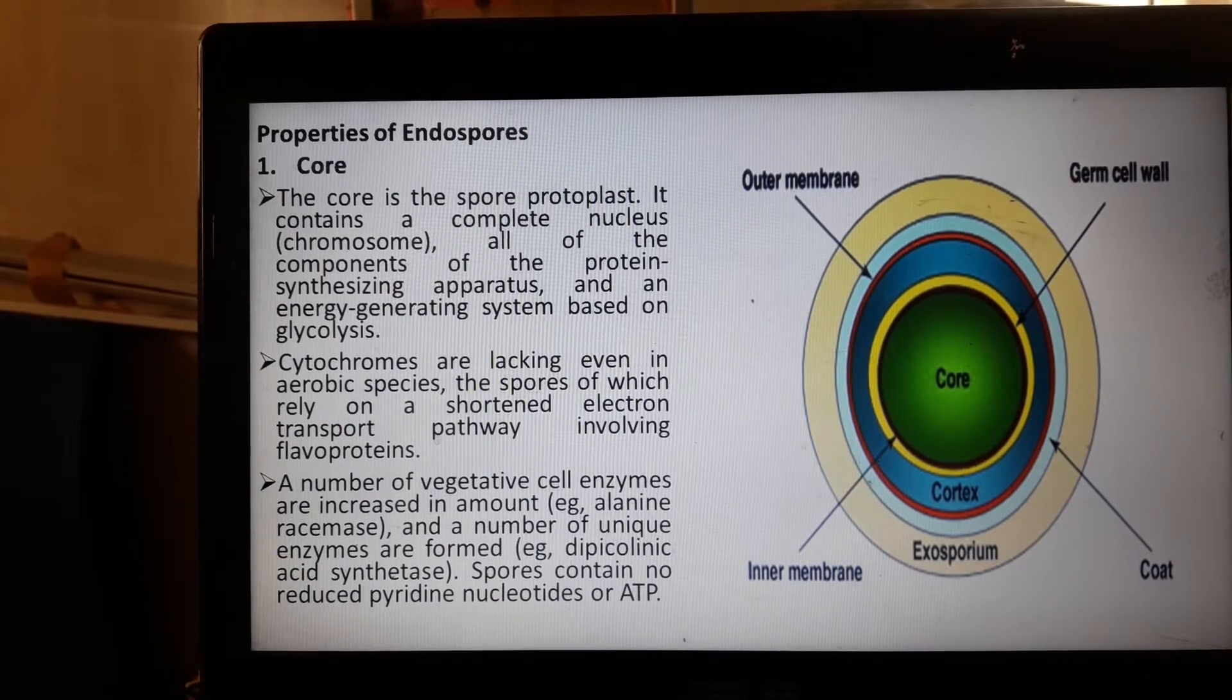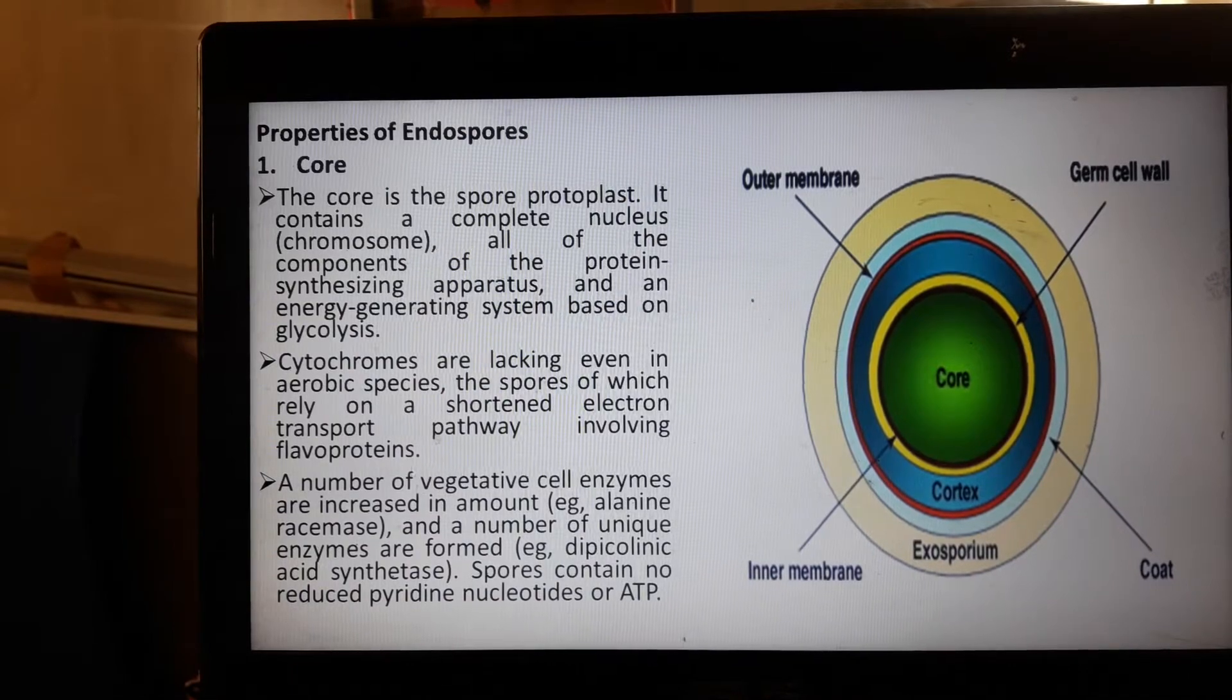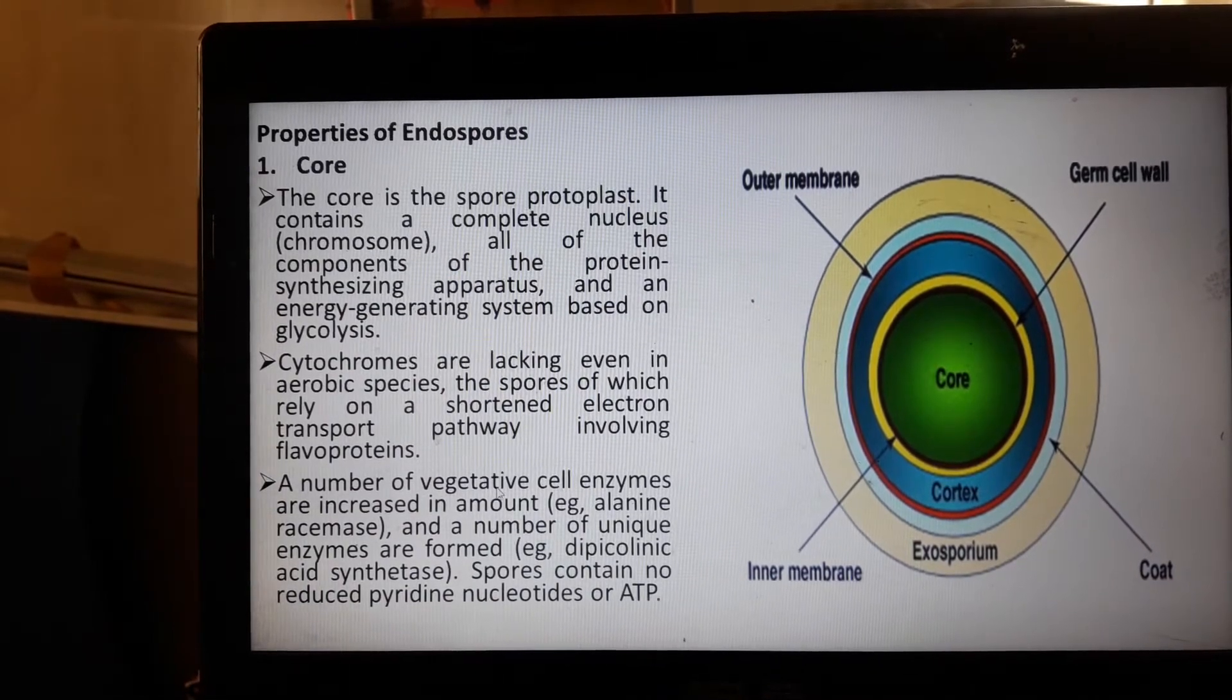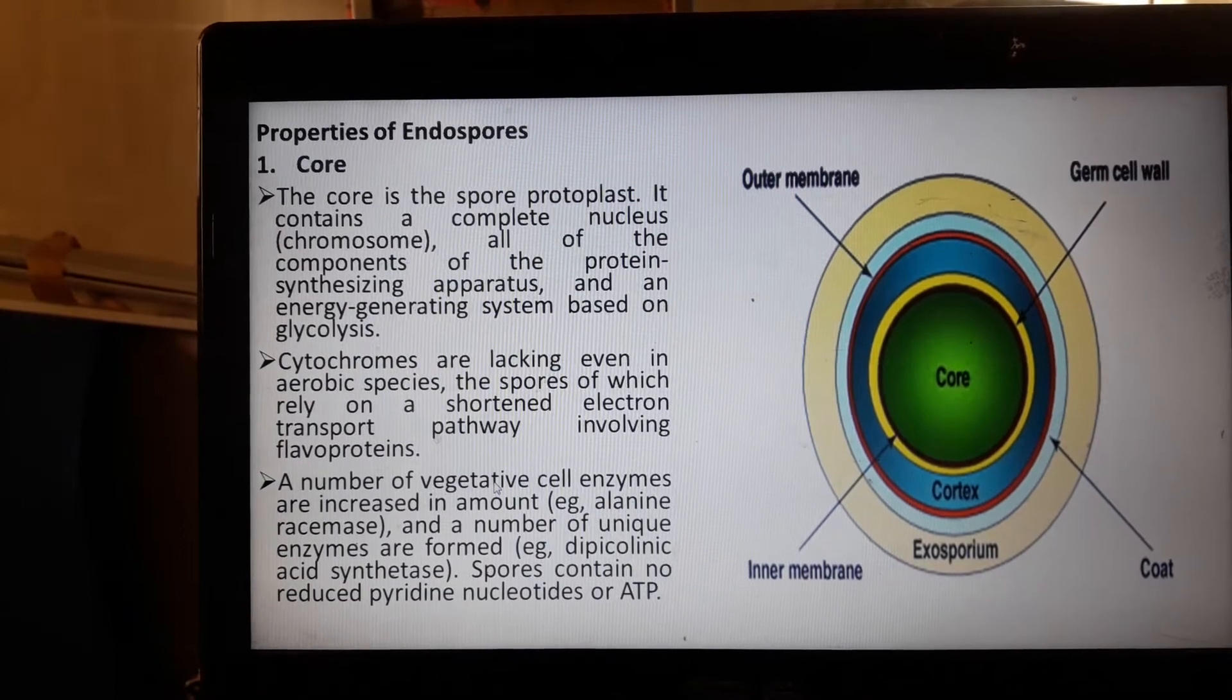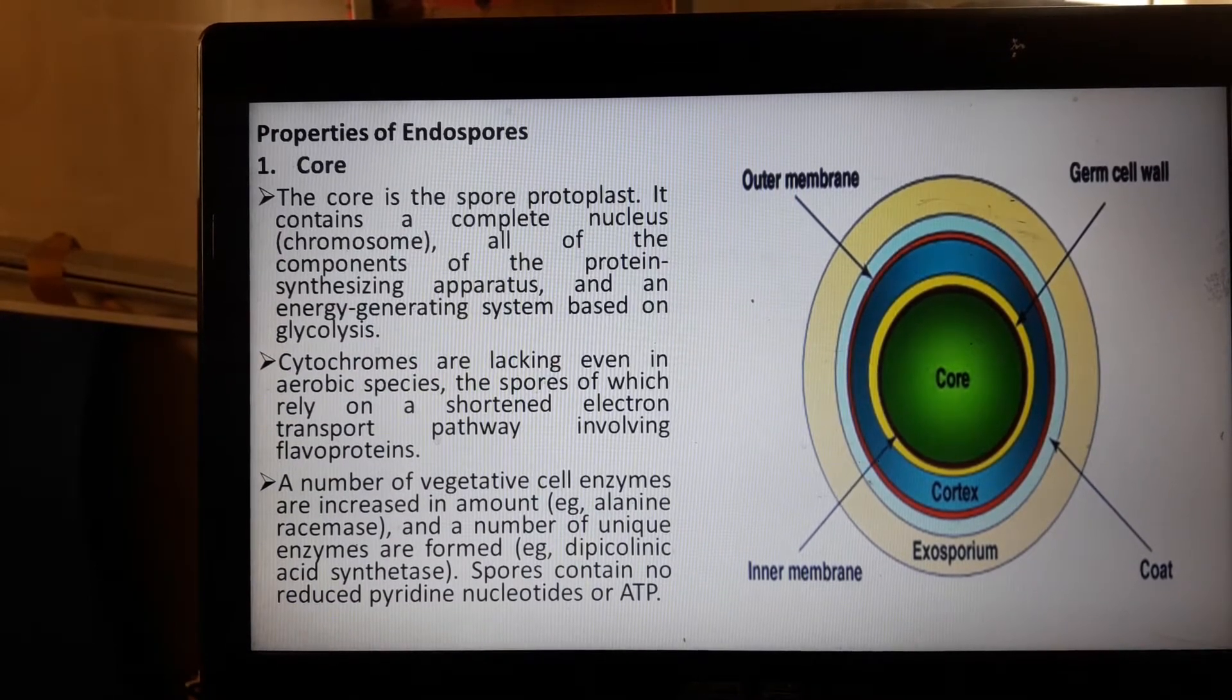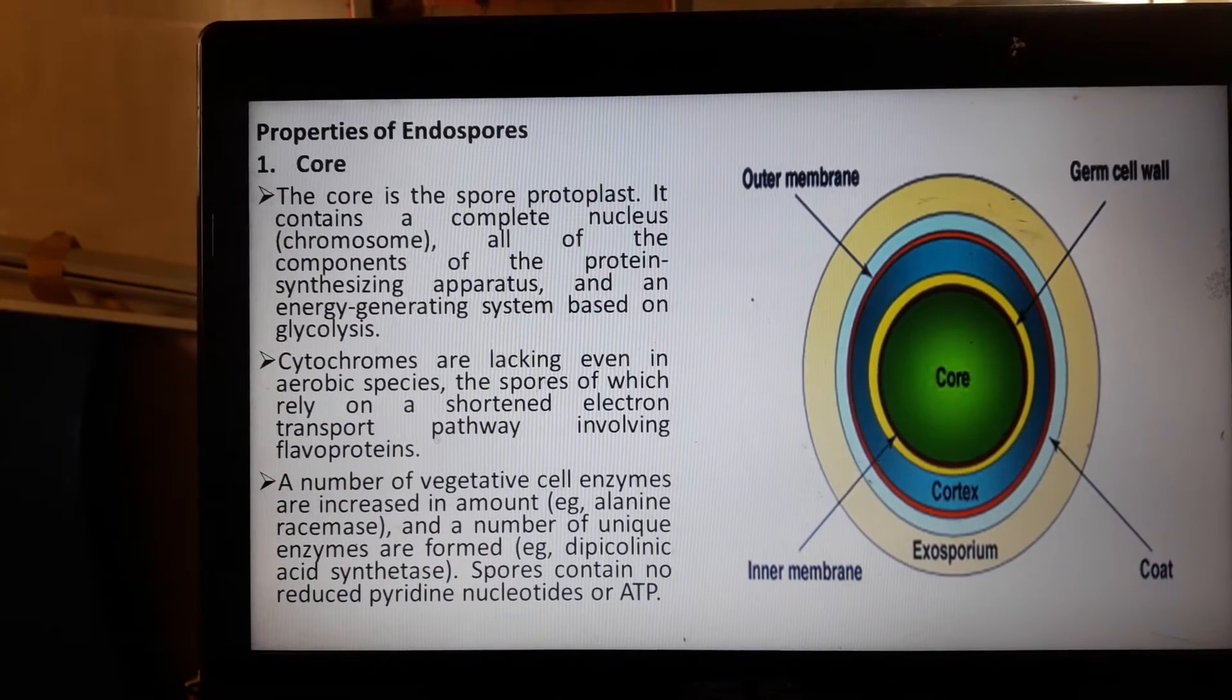A number of vegetative cell enzymes—vegetative meaning the stage where cells reproduce or multiply and are increased in amounts—have enzymes involved in the vegetative stage of the cells.